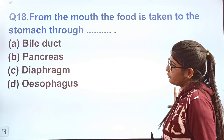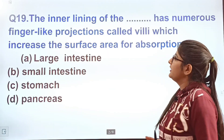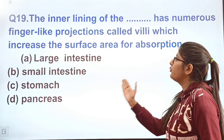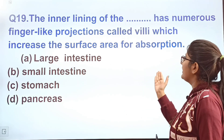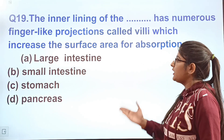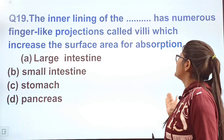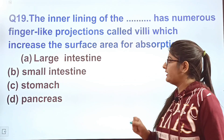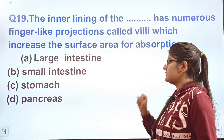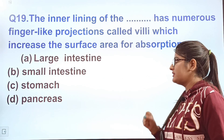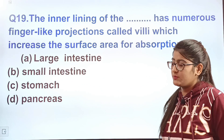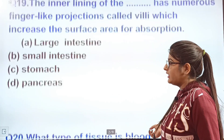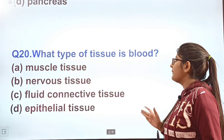Question 19: The inner lining of the dash has numerous finger-like projections called villi, which increase the surface area of absorption. Where are villi found? Large intestine, small intestine, stomach, or pancreas?